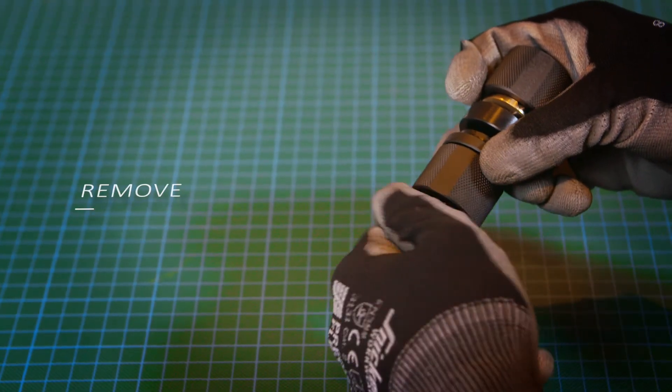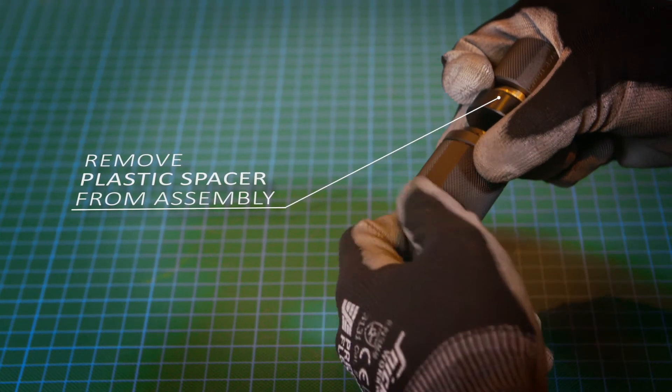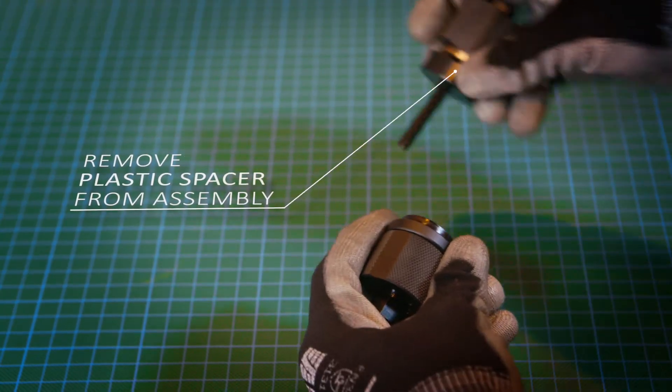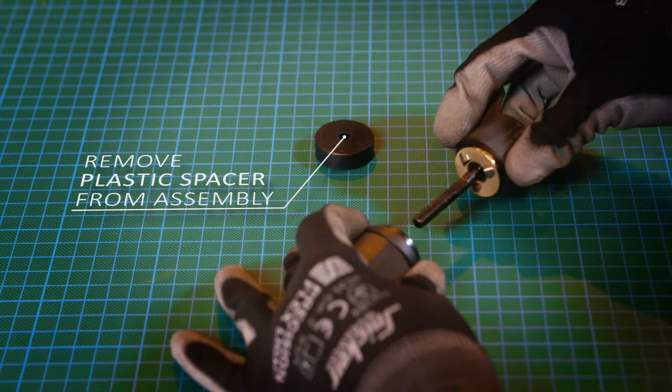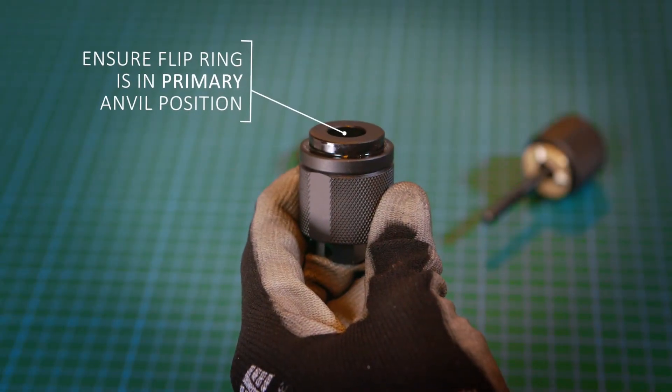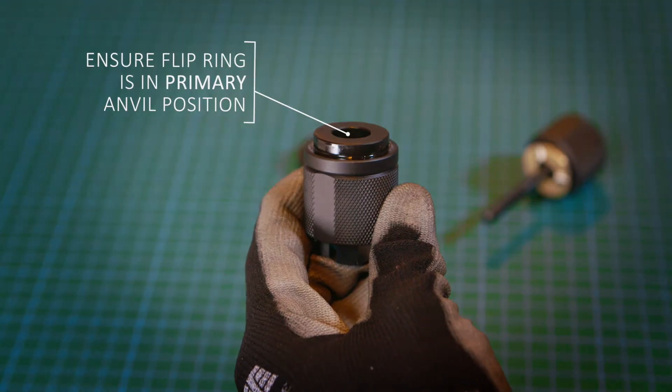To begin, disassemble the tool by unscrewing the hex nut on the locating feature and removing the plastic spacer from the assembly. Ensure the flip ring is in the primary anvil position, with the flat side exposed.